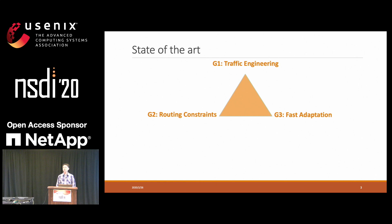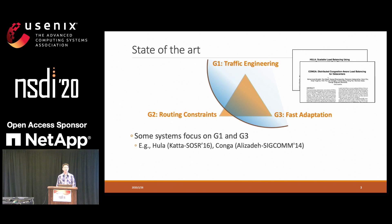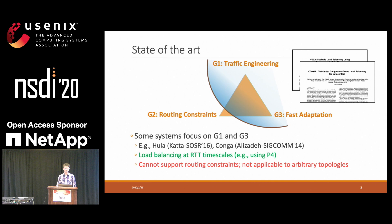However, existing works usually only cover some of the three goals, but not all of them. For example, Hula and Kanga focus on traffic engineering and fast adaptation. They can do load balancing at line-rate timescales. For example, Hula uses P4 language to implement a data plane solution. However, they cannot support routing constraints, and they are not applicable to arbitrary topologies.